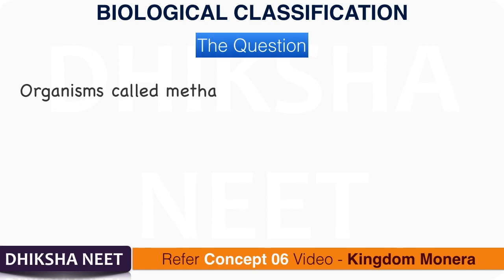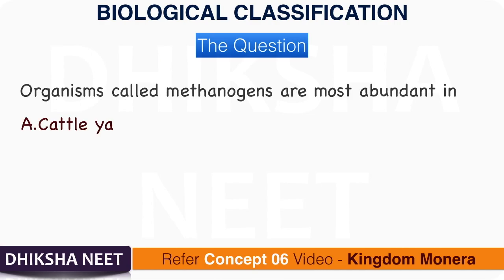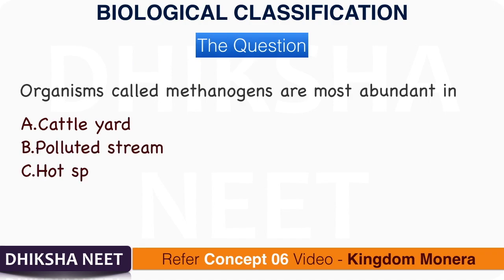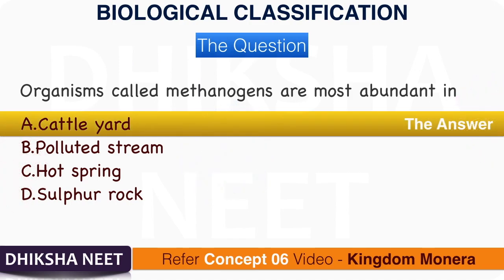Question 9: Organisms called methanogens are most abundant in: A. Cattle Yard. B. Polluted Stream. C. Hot Spring. D. Sulphur Rock. The answer is option A, Cattle Yard.